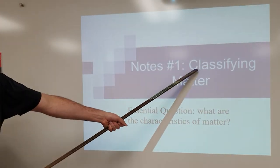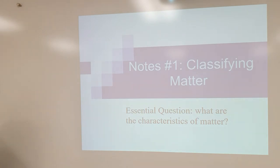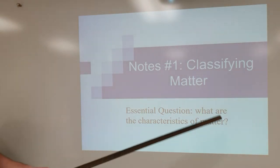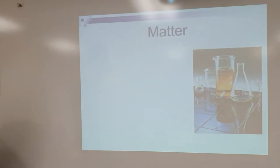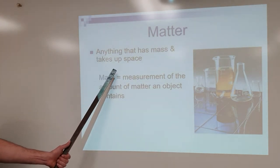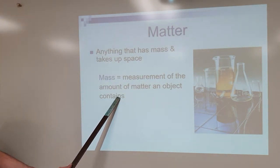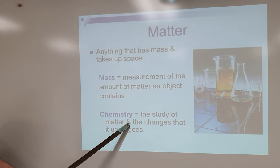Let's talk about classifying matter, particularly because in chemistry we study the behavior of matter. Chemical reactions are the ways in which matter — atoms, molecules, and stuff we can interact with — interact with each other when combined. So if we're going to study how matter behaves, we need to understand the big picture of how we classify it. Matter is anything that has mass and takes up space. Mass is the measurement of the amount of matter an object contains — typically grams, kilograms, whatever. Chemistry itself is defined as the study of matter and the changes that it undergoes.